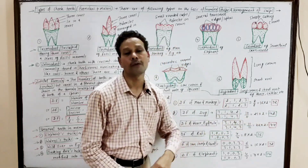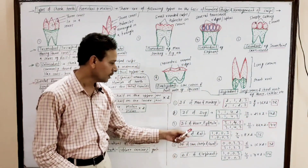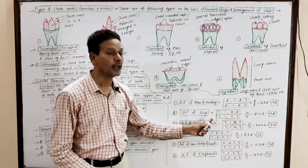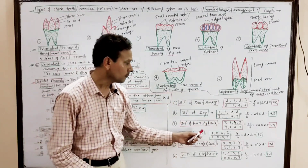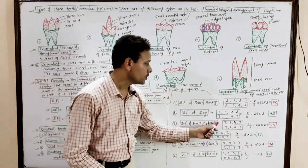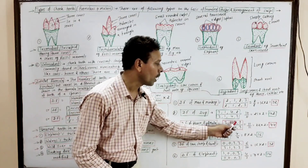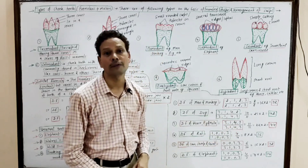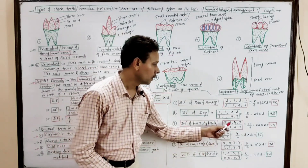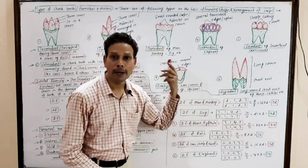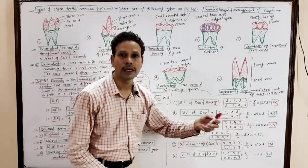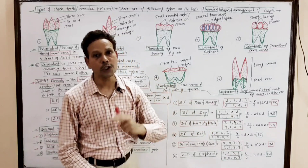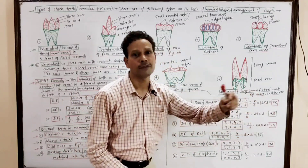The dental formula of horse, pig, and mole: in the upper jaw it is I 3, C 1, PM 4, M 3; and in the lower jaw again it is 3, 1, 4, 3. That gives 11 in the upper half and 11 in the lower half — 11 plus 11 equals 22, multiplied by 2 gives 44 teeth.